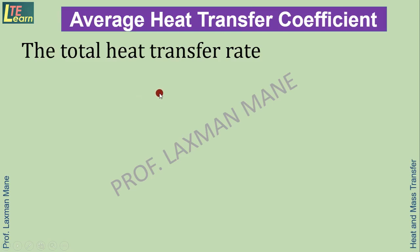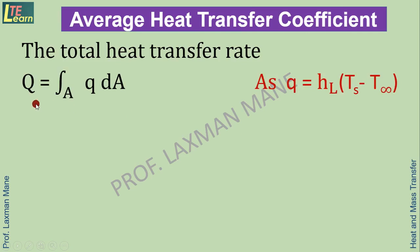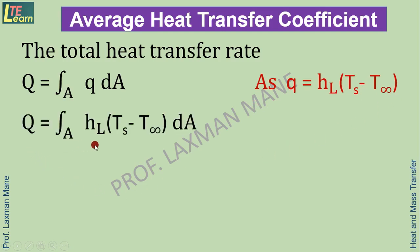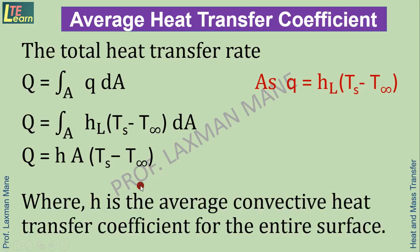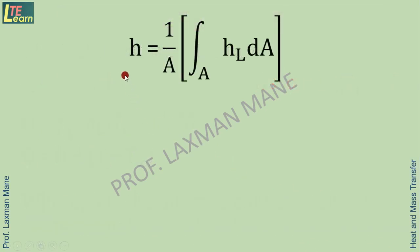The total heat transfer rate is given by the formula: capital Q equals the integration of small q into dA. Since small q equals HL into Ts minus T infinity, this becomes the integration of HL into Ts minus T infinity into dA. This simplifies to Q equals small h into capital A into bracket Ts minus T infinity, where H is the average convective heat transfer coefficient for the entire surface, expressed as H equals 1 upon A times the integration of HL into dA.